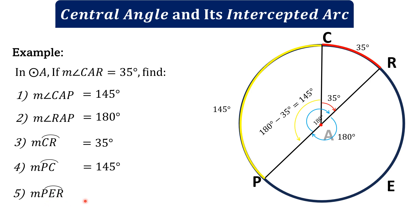Last, the measure of arc PER. Arc PER is a semicircle because of the diameter PR, and any semicircle measures exactly 180 degrees. Let's have another example.